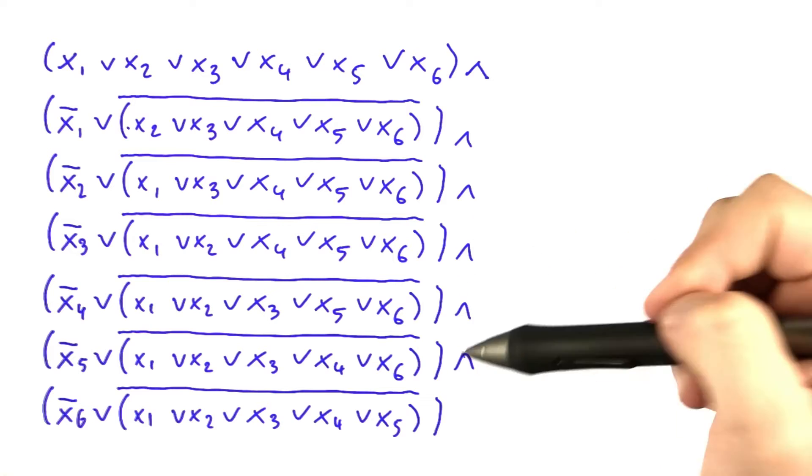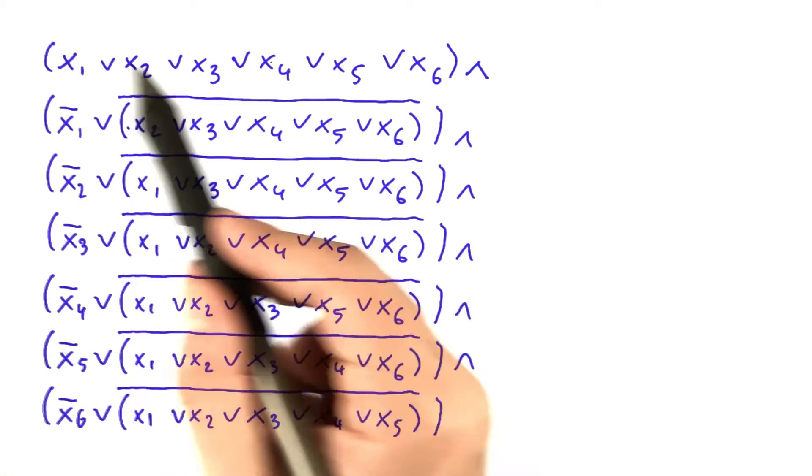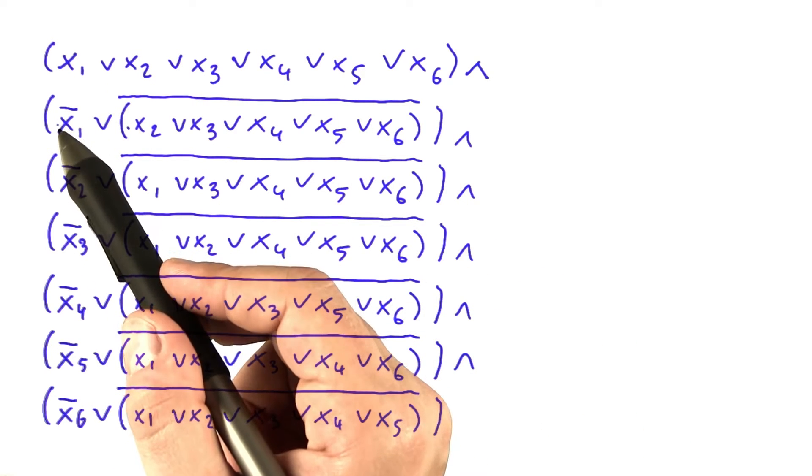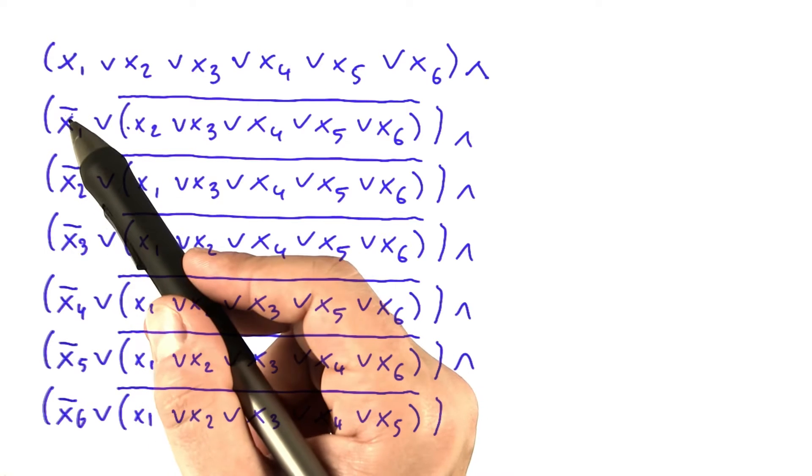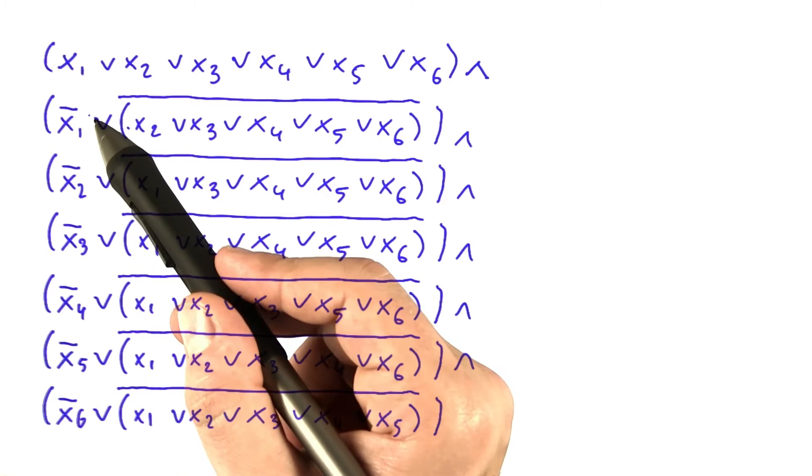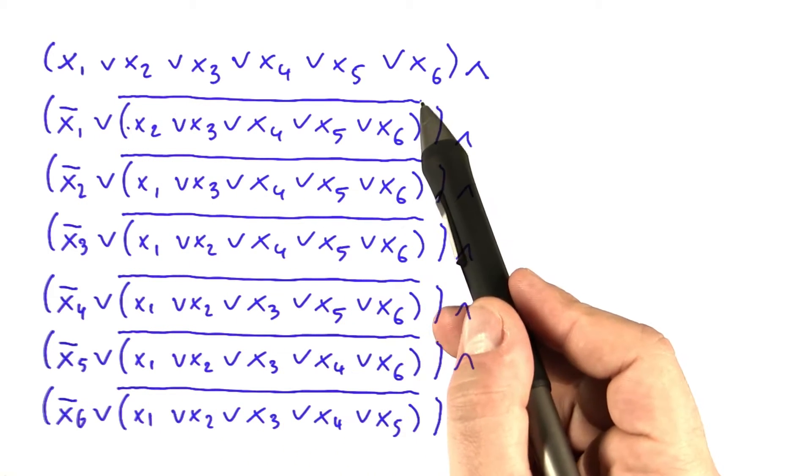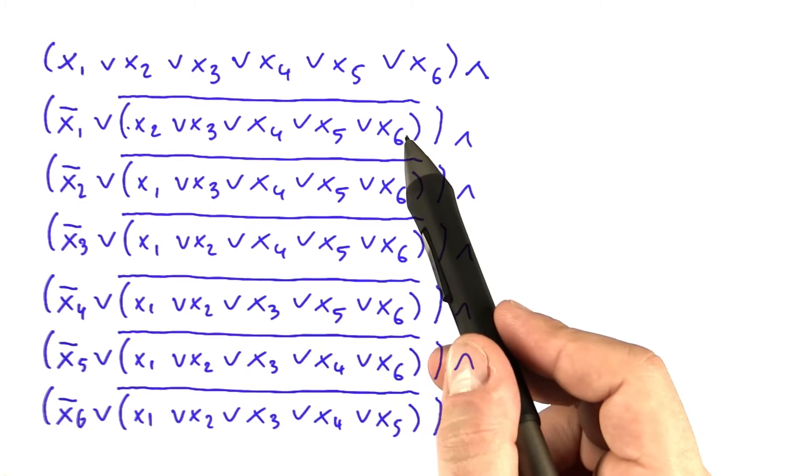They're all connected with an AND here, and each one of them looks like this. So up here, you have an OR over all of those variables. And down here, each bracket has a very similar structure. So you have one of the variables and a NOT of that variable, OR, and this is a very big NOT over all of the other variables, and those are combined by OR.